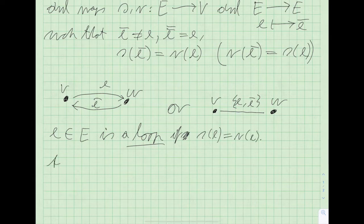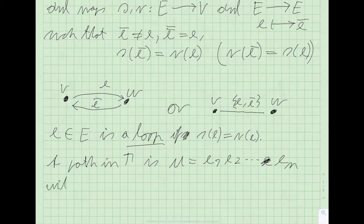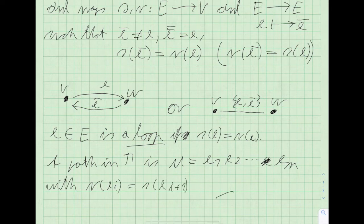A path in the graph gamma is a sequence of edges E1 up to En, with the range of E_i being the same as the source of E_{i+1} for all i. This means each successive edge starts where the previous one left off.